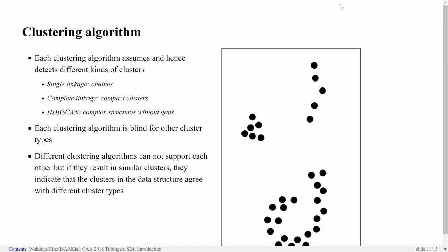To give some examples. We work a lot in clustering algorithms, so it was natural for us to take examples from that. Each clustering algorithm detects different kinds of clusters. For example, single linkage detects these chains, while very classical complete linkage detects clusters that are compact in a way and round and so on, while for example HDBScan is designed to detect such things as a cluster.